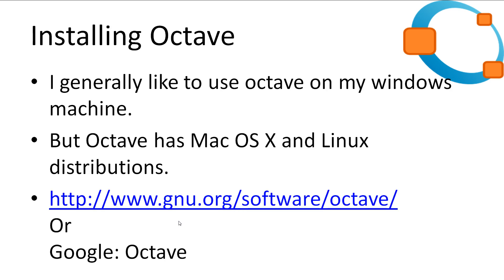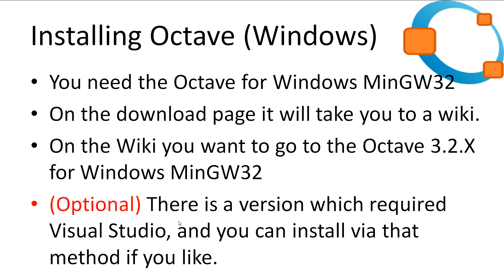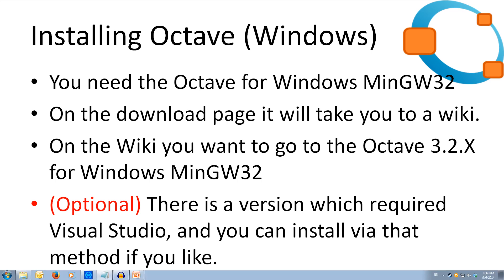Let's get on to installing Octave. I like to use Octave on my Windows machine, however there are OSX and Linux versions available. You have to go to the Octave website shown here — I'll put a link in the description, or you can Google Octave and it should be the first result. When installing on Windows, I like to use the MinGW32 version as I find it's nice and easy to install. The download page will take you right to a wiki and you can click the link under the Windows section. In this wiki you will need to look for the Octave 3.2.x for Windows MinGW32. Here we can just download the installer and it will set up everything we require. There are also instructions if you get stuck.